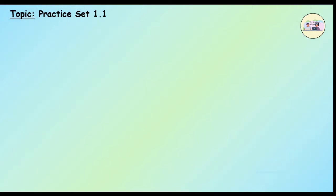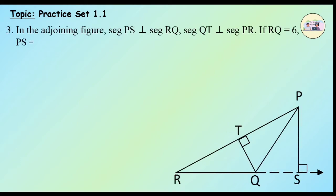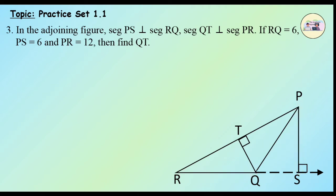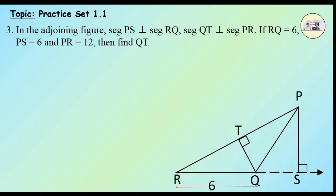Let us solve the remaining questions of Practice Set 1.1, Question 3. In the adjoining figure, segment PS is perpendicular to segment RQ, segment QT is perpendicular to segment PR. If RQ is 6, PS is 6, and PR is 12, then find QT.